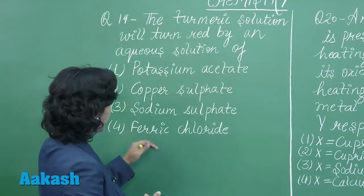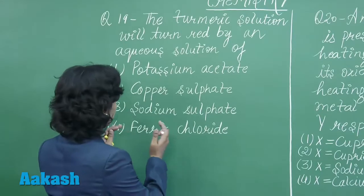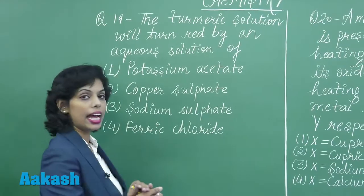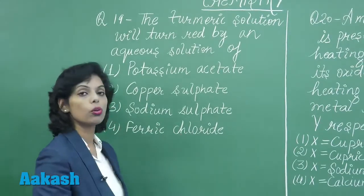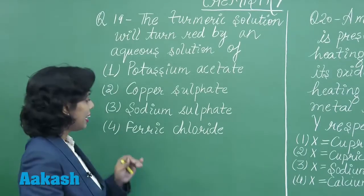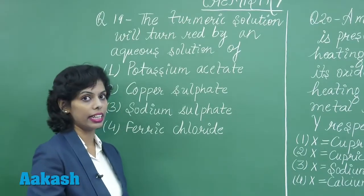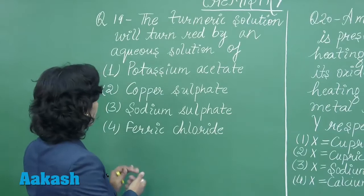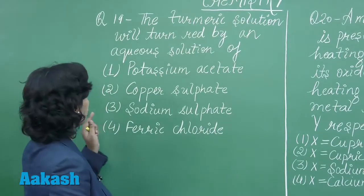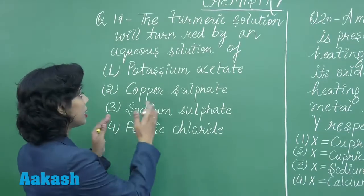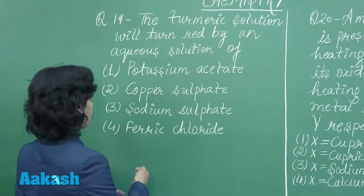Further, ferric chloride is the salt of ferric hydroxide, which is a weak base, and hydrochloric acid, which is a strong acid. This means the solution is acidic in nature. So the correct answer for this question is option one, because it forms a basic solution in aqueous solution.